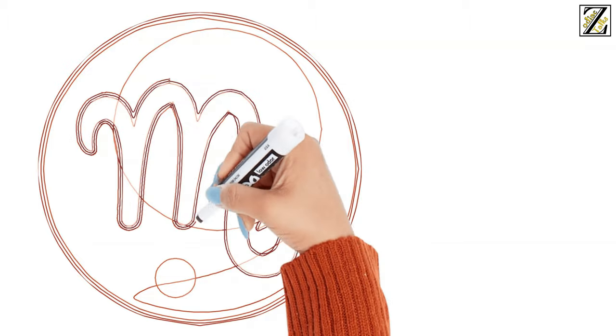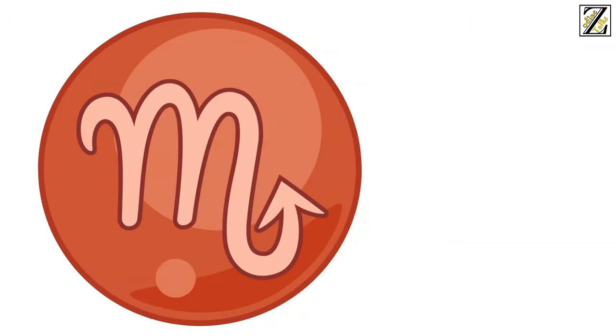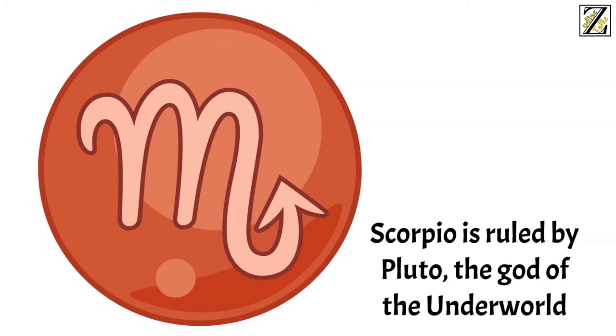Scorpio is the 8th zodiac sign. It's fixed and of a water element. Scorpio is ruled by Pluto, the god of the underworld.